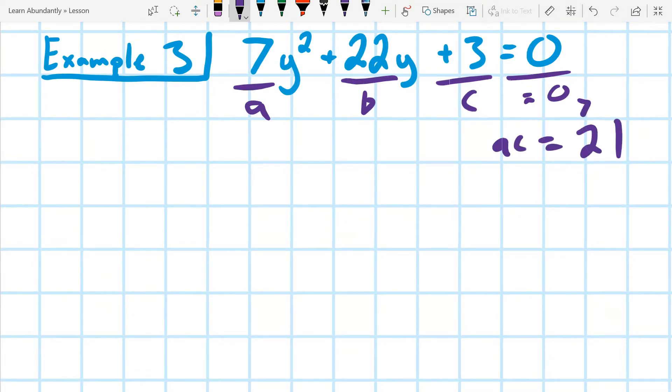And then what we're going to do is we're going to list all the factor pairs of 21. And what we're looking for is we want a factor pair that equals 22 when we add them up. And really, that's all I've got. I've got negative, I've got one in 21 and three in seven, and I could do negatives as well. But I can already see that one and 21 are going to do it.